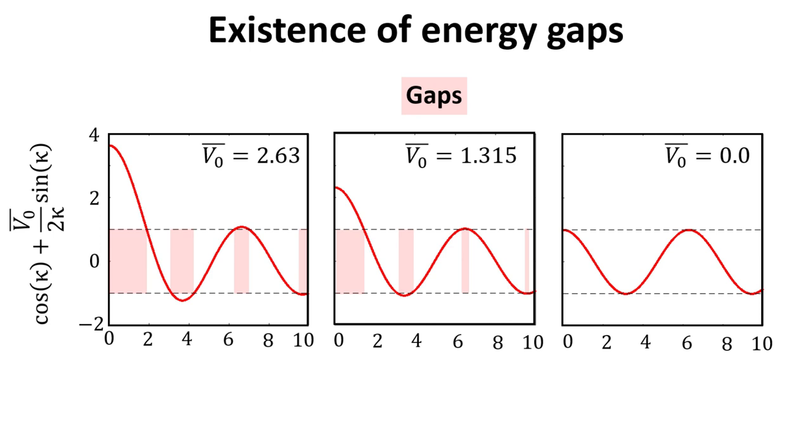In this video, we discussed the Kronig-Penney model. You saw how the formalism developed in the derivation of Bloch's theorem can be used to solve for the electron states in a periodic potential.